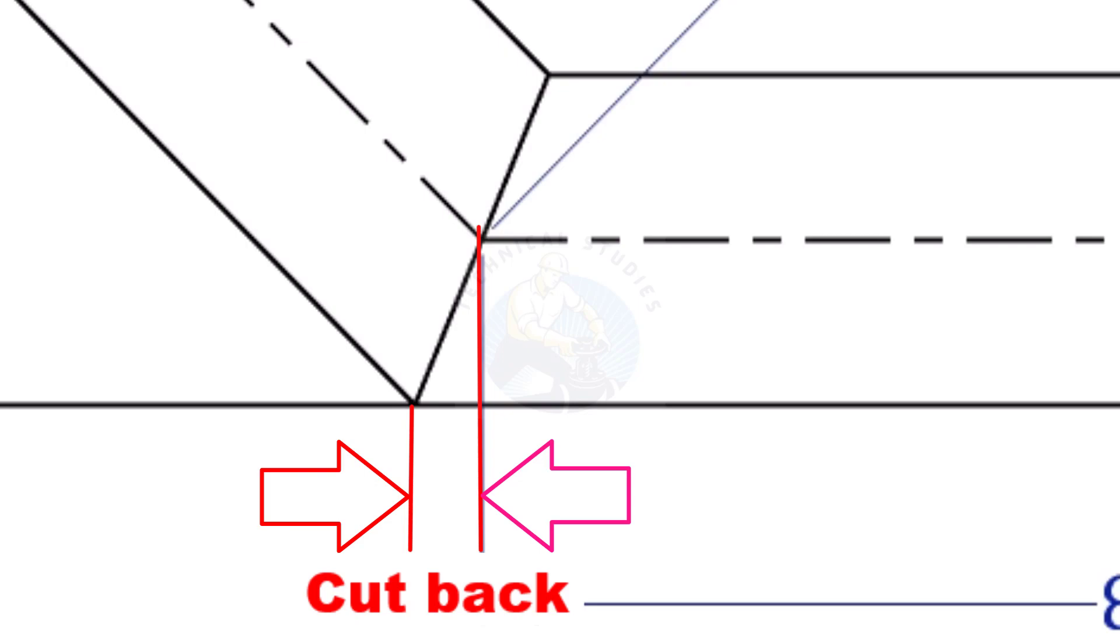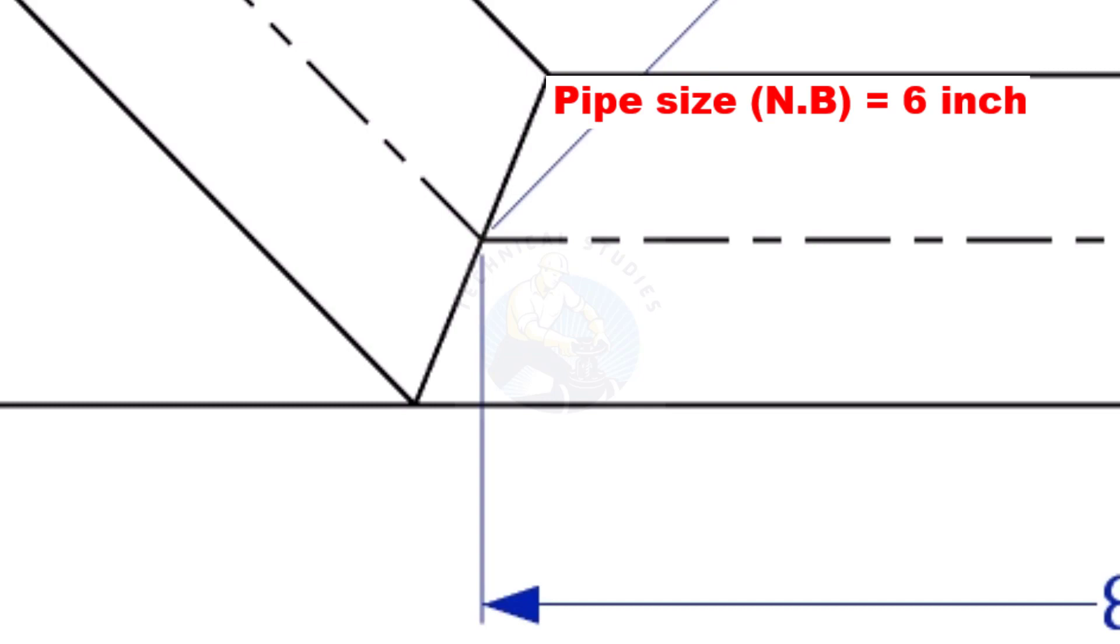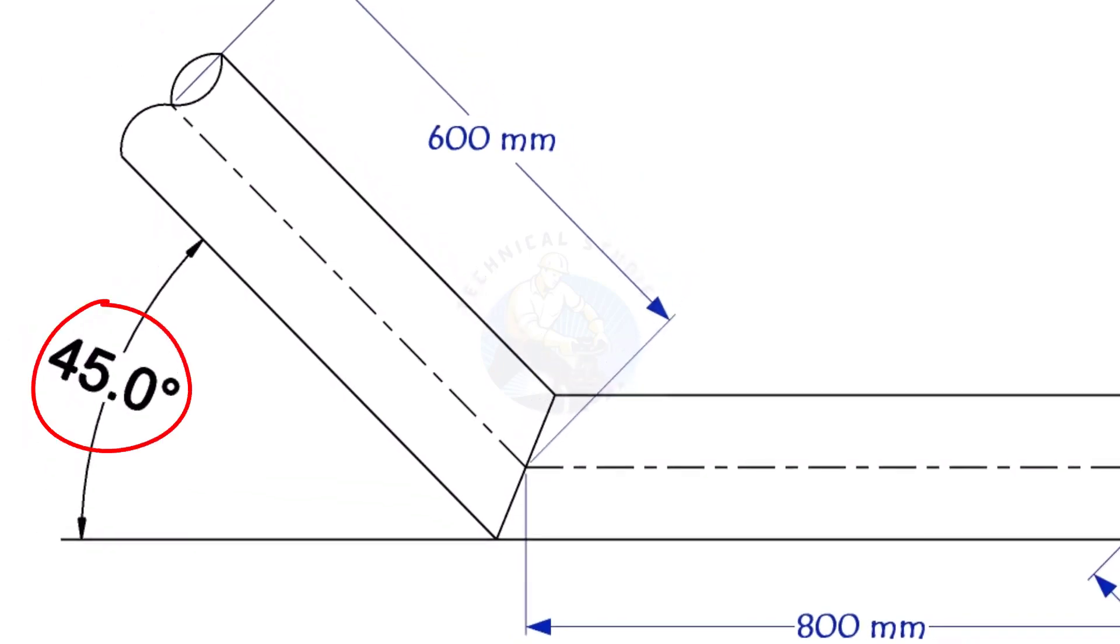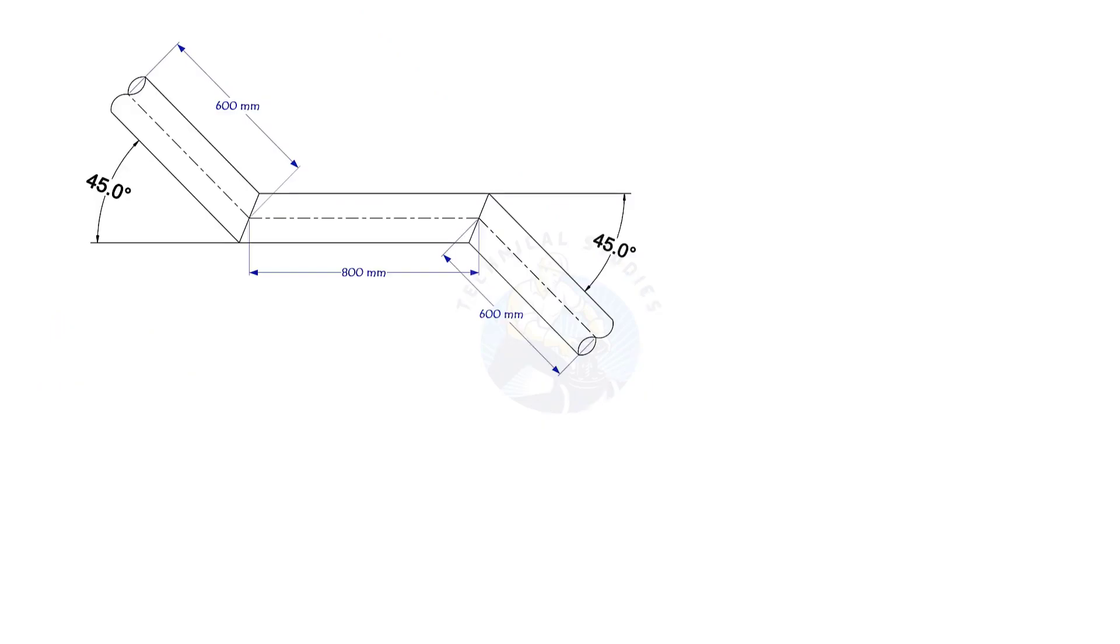To mark a miter cut, we need to know the cutback of the miter. In this offset, the nominal diameter of the pipe is 6 inch. The angle of the miter is 45 degree. This method is suitable for cutback of any degree.